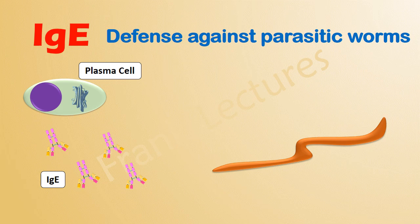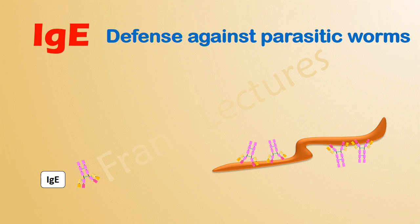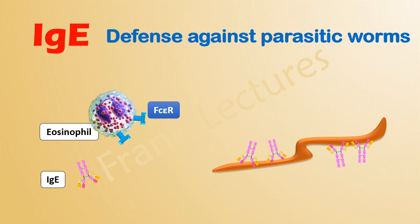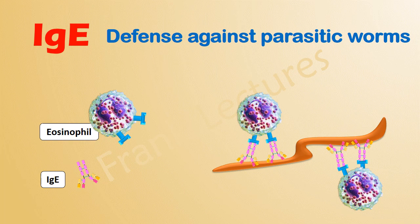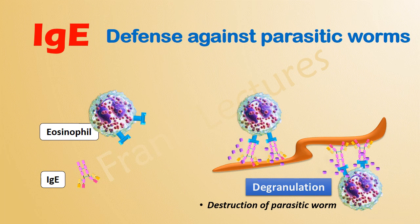These antibodies then coat the surface of the worm by binding to their surface antigens. These bound IgE antibodies are recognized by eosinophils. This recognition is mediated by specific Fc receptors present on the eosinophils, which recognize and bind the Fc region of IgE antibodies. Once bound, the eosinophils undergo degranulation, and the released granule contents destroy the parasitic worm.